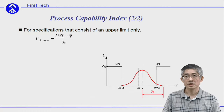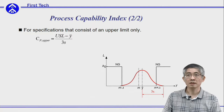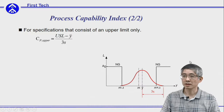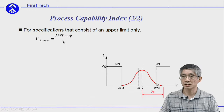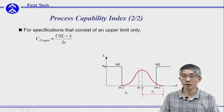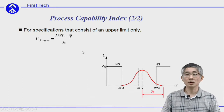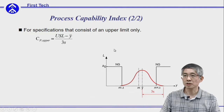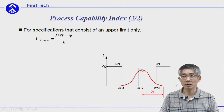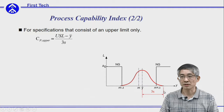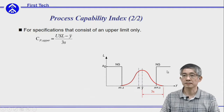In cases where your specification contains only an upper limit, your distribution must be smaller than a certain value M plus delta, where M is the target. With the distribution centered at y-bar with standard deviation S, the CP for an upper-limit-only process is the distance from the upper limit to the mean of your distribution divided by three times the standard deviation. This is called CP for upper limit only.